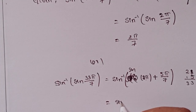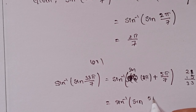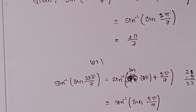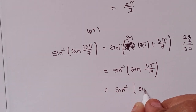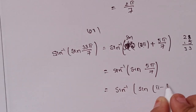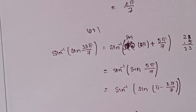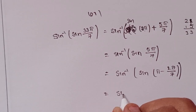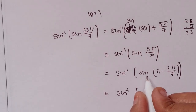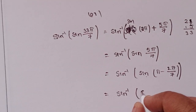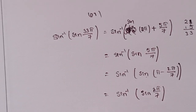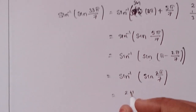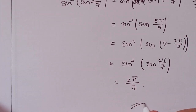We can also write sin inverse of sin(5π by 7). Since 5π by 7 equals π minus 2π by 7, sin inverse of sin(5π minus 2π by 7) gives sin inverse of sin(2π by 7). These two cancel, confirming 2π by 7 is the solution.